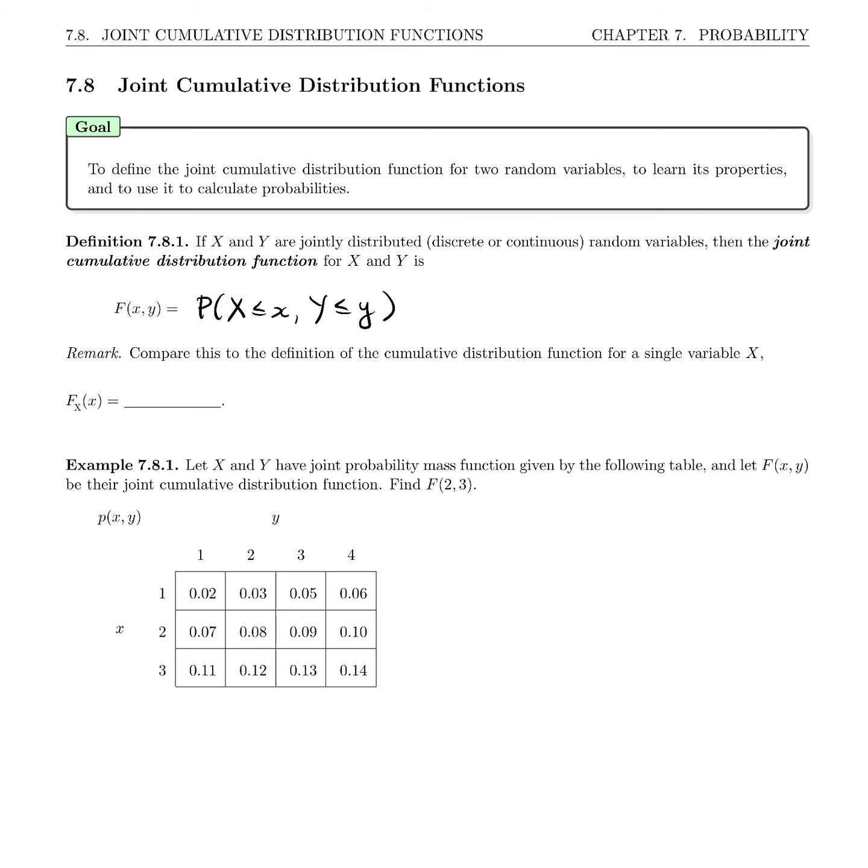As a remark, if you compare this to the definition of the CDF for a single variable X, F_X(x) was exactly the same thing, but just for one variable: the probability that X is less than or equal to little x.